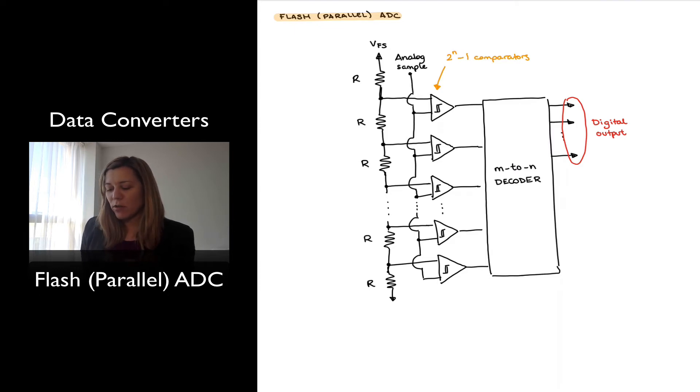So for example, if I have a 3-bit system, I will have 2 to the 3 or 8 possible states. That will require 8 minus 1 or 7 comparators. Notice that there are 2 to the N minus 1 comparators. And so I will have them to decode that to my 3-bit digital output.